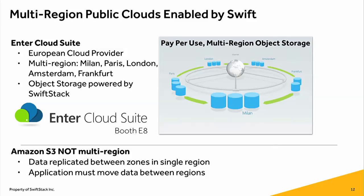So why not just use cloud for everything? If you're familiar with the Amazon ecosystem, they have S3, which is also object storage in the cloud, and they too have multiple regions. But as an application, you have to know to put data in this region or that region — you have to move the data between the two regions yourself. One of the first service providers to use this multi-region capability in Swift is EnterIT; they have a multi-region European cloud and a booth here you can visit.